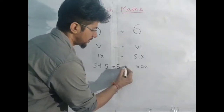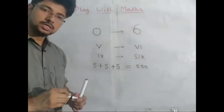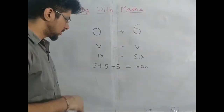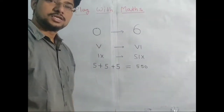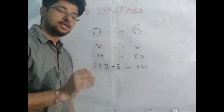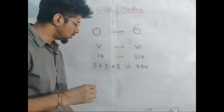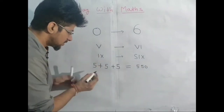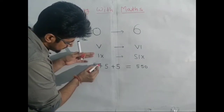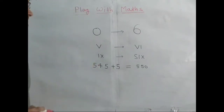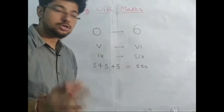So how can five plus five plus five equal five-five-zero? Let me tell you — because it's playing with maths! Can I make a straight line? Yes — I can make a straight line like this.